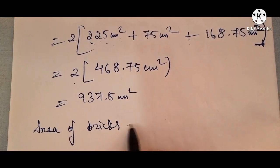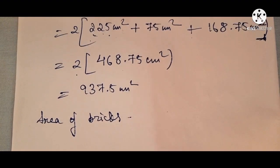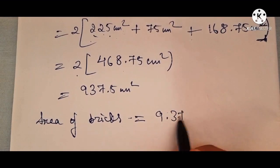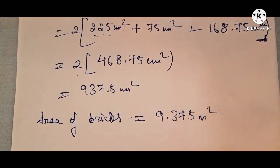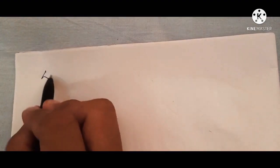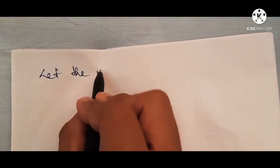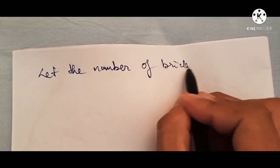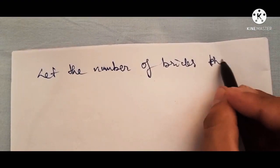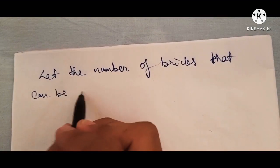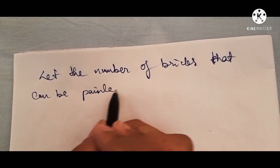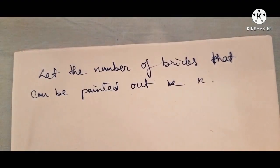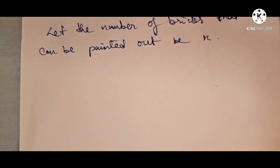So the total surface area of one brick is 937.5 centimeter square. The area available from the paint container is 9.375 meter square. Let the number of bricks that can be painted be x.